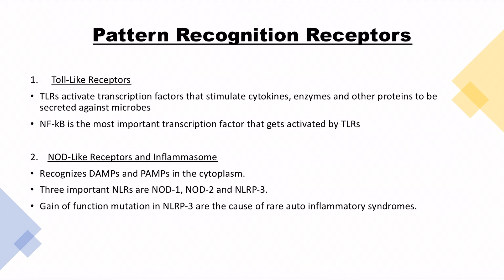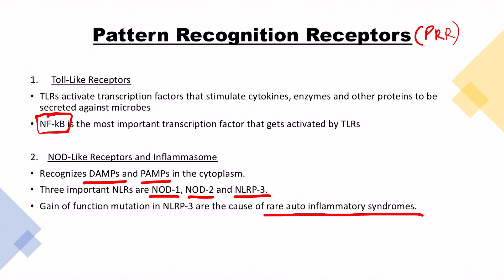Also, identical receptors are expressed on all cells of a particular type, such as macrophages. Pattern recognition receptors include toll-like receptors, which activate transcription factors like NF-κB — the most important transcription factor activated by TLRs. NOD-like receptors and the inflammasome are another type of PRRs that recognize DAMPs and PAMPs in the cytoplasm. The three most important NLRs are NOD1, NOD2, and NLRP3. Gain-of-function in NLRP3 causes rare autoinflammatory syndromes.